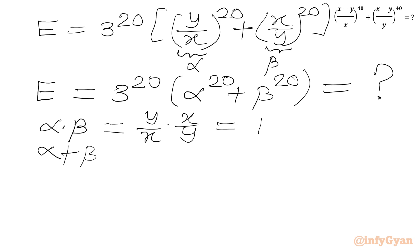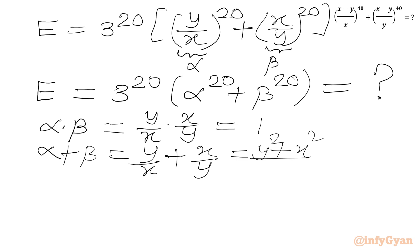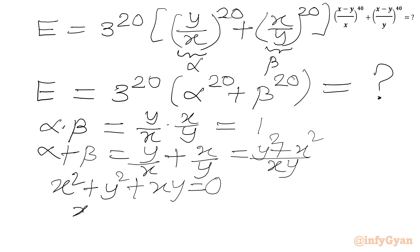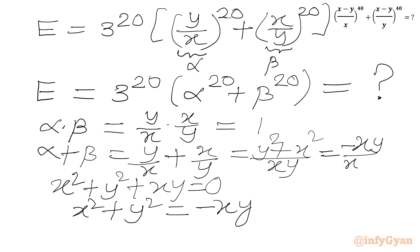Now alpha plus beta equals y over x plus x over y. Taking LCM gives (y squared plus x squared) over xy. From the given equation x squared plus y squared plus xy equals 0, we get x squared plus y squared equals minus xy. So alpha plus beta equals minus xy over xy, which equals minus 1. Therefore alpha times beta is 1, alpha plus beta is minus 1, and the required expression is 3 power 20 times (alpha power 20 plus beta power 20).